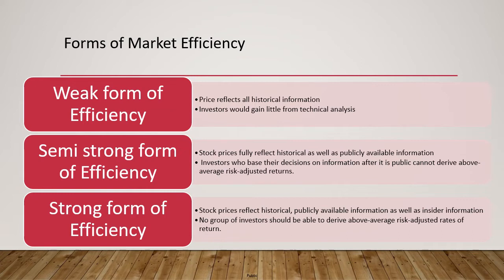The first is the weak form of efficiency. This form says that prices reflect all historical information about the stock — whatever happened in the past is already reflected. That is precisely why technical analysis does not have much significance under this form. Technical analysts look at past price behavior to predict future patterns, but weak form efficiency argues that this information is already captured in the price.